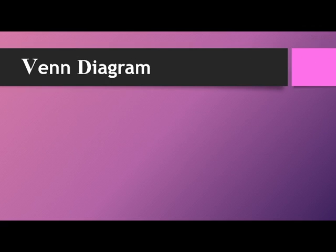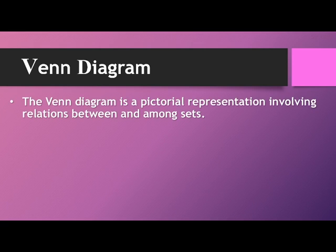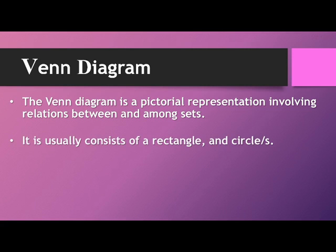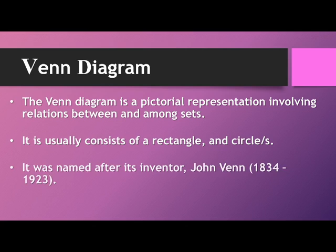So first, let's go with the Venn diagram. The Venn diagram is a pictorial representation involving relations between and among sets. It usually consists of a rectangle, which is the universal set, and a circle or circles which represent sets. It was named after its inventor, John Venn.